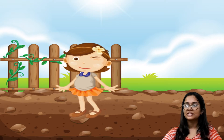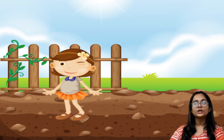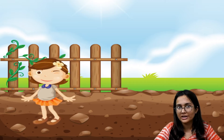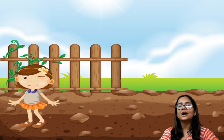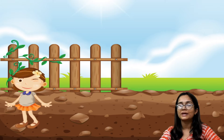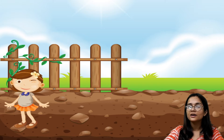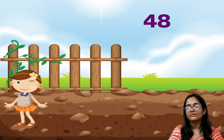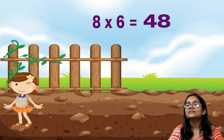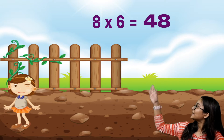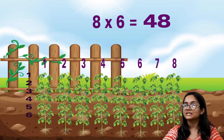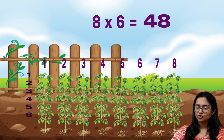Each row should have the same number of plants. What you need to do is find the number of rows so that the same number of plants are in each. When we read the number 48, we know that 8 sixes are 48. So if we make 8 rows of 6 plants each, then each row will have the same number of plants and all 48 plants will also be covered.